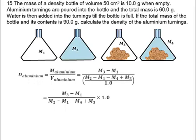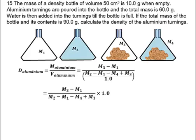In that question, we derived this expression where we determined the density of copper turnings — therefore, we determined the mass of copper and the volume of copper. But that method could be used for any solid. In this question, we are trying to determine the density of aluminium. The other difference is that in question 13, the liquid used was kerosene, whose density is 0.8 grams per centimeters cubed. In this question, water is used.